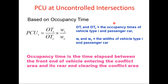PCU at uncontrolled intersections is suggested based on occupancy time, and this method has been adopted in the Indian Highway Capacity Manual. PCU by this method is given by the ratio of occupancy time multiplied by the ratio of width: (OTI/OTC) × (WI/WC), where OTI and OTC are occupancy times of vehicle type I and passenger car, and WI and WC are their respective widths. Occupancy time is defined as the time elapsed between the front end of the vehicle entering the conflict area and its rear end clearing it. This depends on the type of movement: for through traffic it differs from turning traffic, and for right turners occupancy time is larger than for left turners.